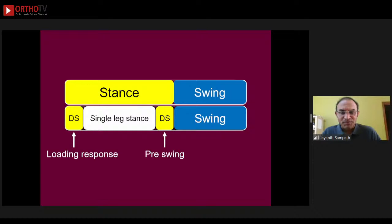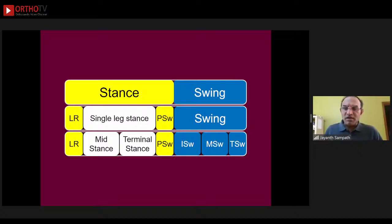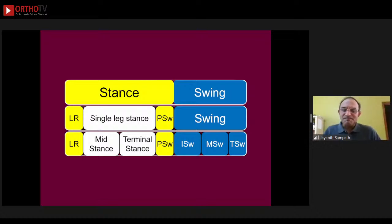The single leg stance is divided into two periods called mid-stance and terminal stance. Mid-stance is when weight acceptance proceeds and the body reaches over the stance phase limb; as the body weight crosses the midline in the sagittal plane it goes into terminal stance, then pre-swing. Initial swing, mid-swing, and terminal swing are the three phases of the swing phase of gait, depending on where the swinging limb is in relation to the stance phase limb.